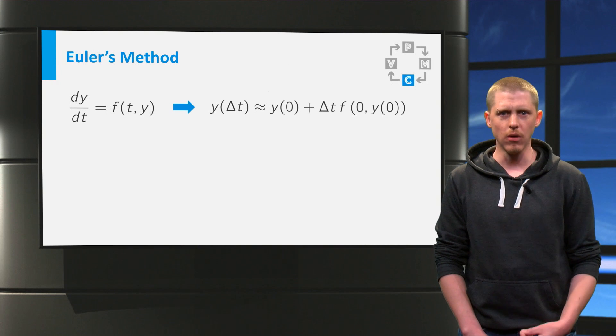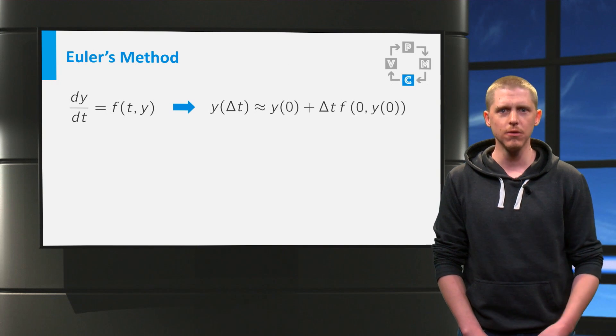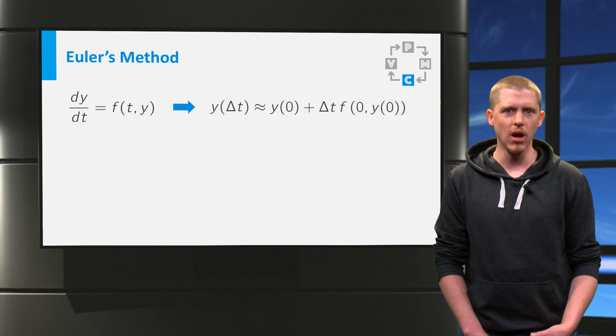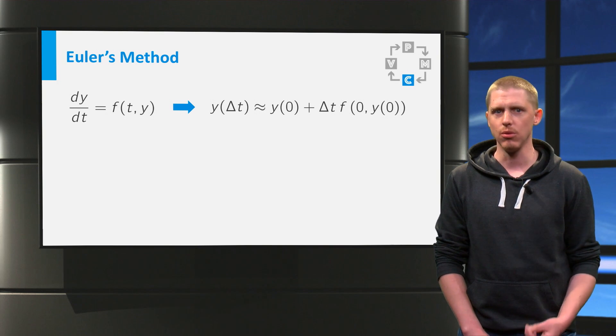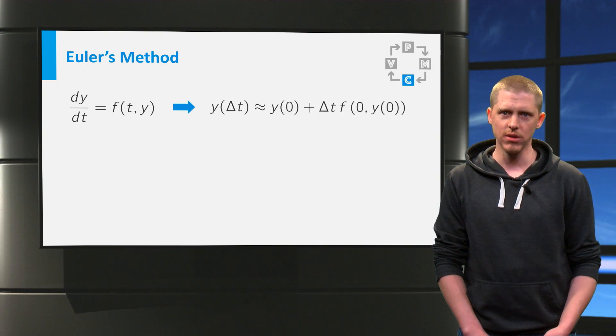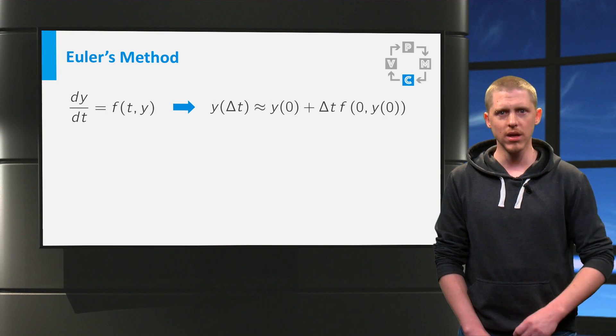The first step of Euler's method for the function y of t is given as y at Δt is approximately y at zero plus Δt times the right-hand function at t zero and y at zero.